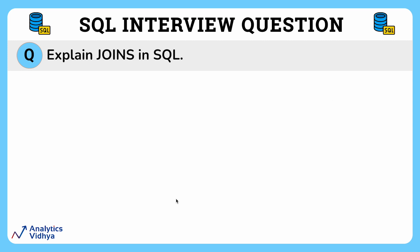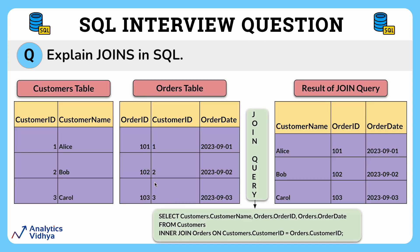Imagine you have two separate lists of information — one with customer information and another with order details. We want to see a list of customers along with the orders they have placed. For this, we use something called an inner join, which combines data from both tables based on a common code — which is customer ID — that they share in common. This way, we connect each customer to their orders, and the result is a neat table showing customer names and the orders they made.